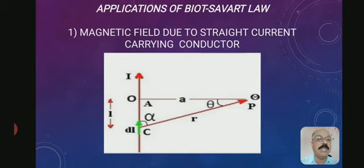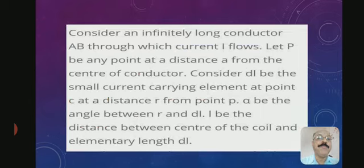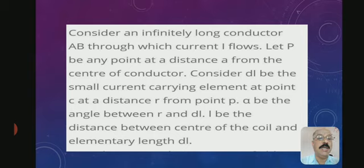Draw a perpendicular line from point P to the conductor, making an angle theta. Consider an infinitely long conductor AB through which current I flows. Let P be any point at a perpendicular distance A from the conductor. Let DL be a small current element at point C, at a distance R from point P. Let alpha be the angle between R and DL, and L be the distance between the center of the conductor and the element DL.